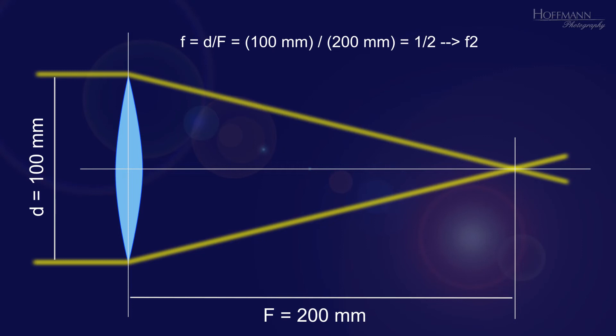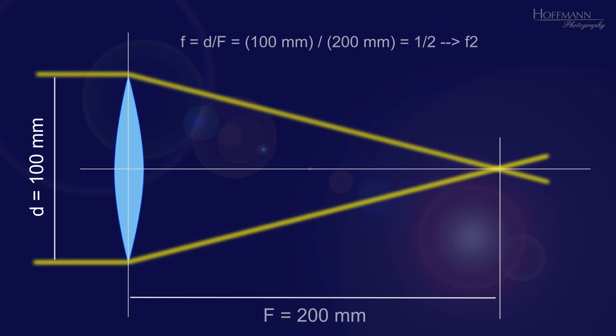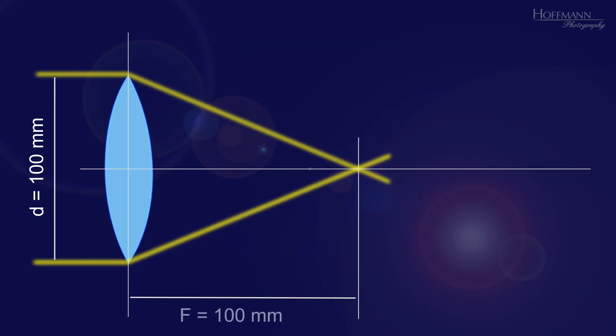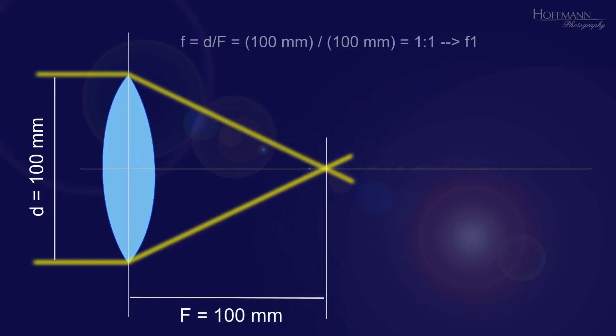With a lens diameter of 100 mm and a focal length of 200 mm, the result is f2. With the same lens diameter but a focal length of only 100 mm, the f-stop would then be f1. Of course, this is not quite as simple for real lenses with multiple elements, but the principle is the same.